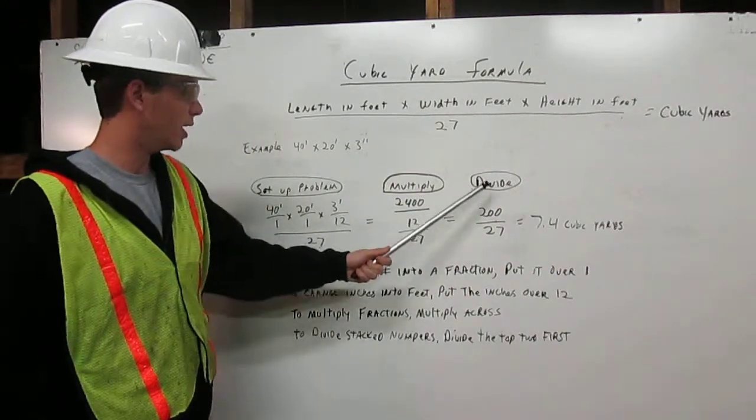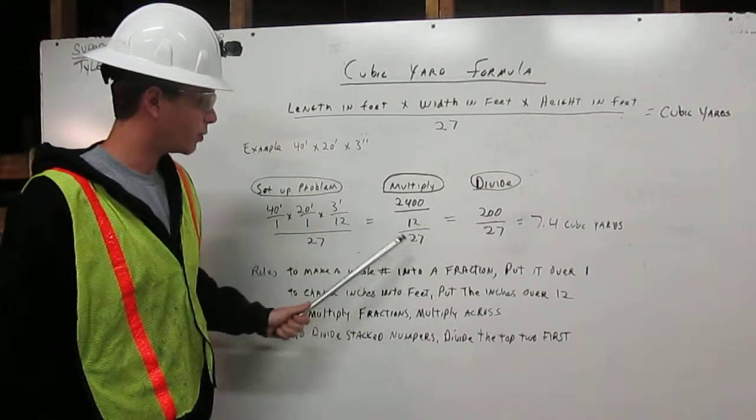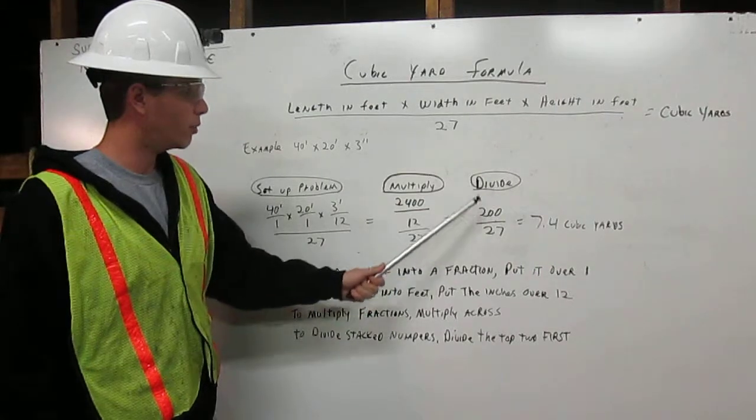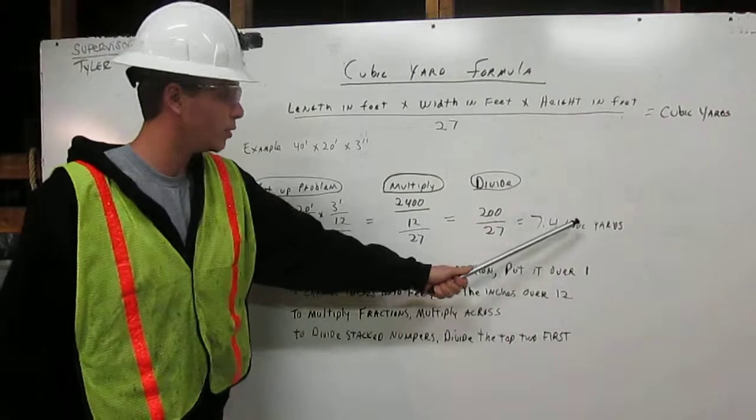Now we are going to divide: 2400 divided by 12 gives us 200. Bring the 27 over, divide one more time. 200 divided by 27 gives us 7.4 cubic yards.